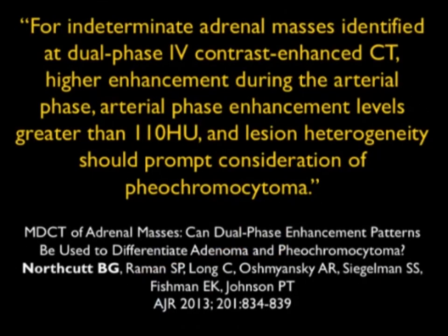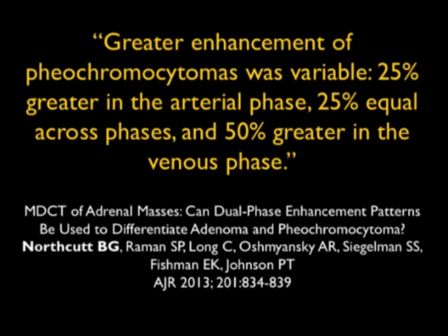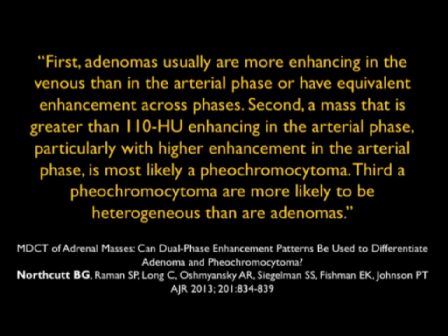An article by Norcutt and the Hopkins group noted that for indeterminate adrenal masses on dual-phase CT, higher enhancement during the arterial phase above 110 HU should make you consider pheochromocytoma. Interestingly, pheos can be brightest in the arterial phase, but sometimes venous phase is brighter, and sometimes equally bright — in their series the venous phase was actually the best phase for detection. Adenomas are usually more enhancing in the venous than arterial phase or have equivalent enhancement across phases.